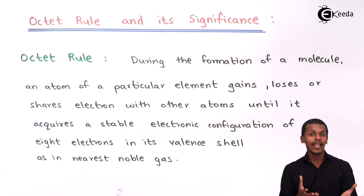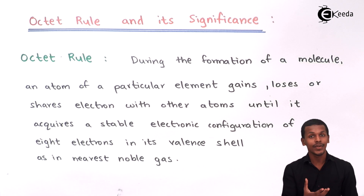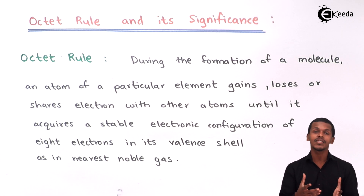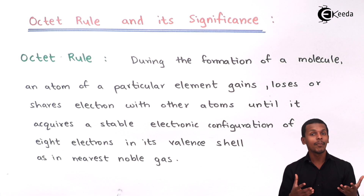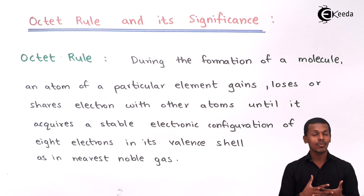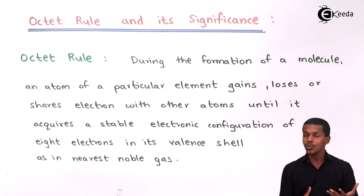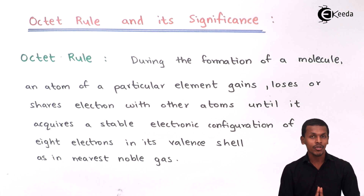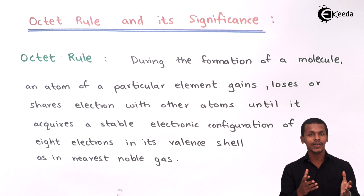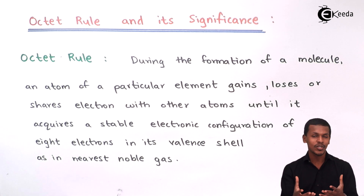Meanwhile, atoms that have fewer than eight electrons in their outermost shell have a particular valency, but that valency does not satisfy a complete electronic configuration. So obviously, what they have to do is either lose electrons or gain some electrons so as to acquire a stable electronic configuration consisting of eight electrons in their outermost shell. And that is what results in bond formation.